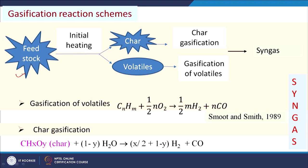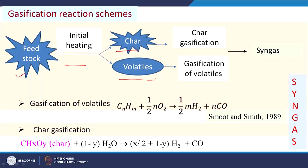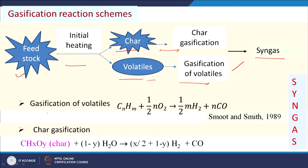Now we will see the mechanism of gasification. When heat and a controlled amount of oxygen are applied, initially char and volatiles form. Volatiles are further gasified, char is further gasified, and ultimately syngas is produced. The representation of this process is: CₙHₘ + 1.5nO₂ → 1.5mH₂ + nCO. For char gasification — char contains carbon, hydrogen, and oxygen — this empirical formula explains hydrogen and CO production from the char.